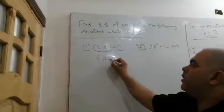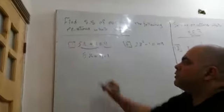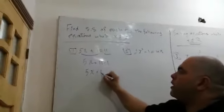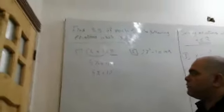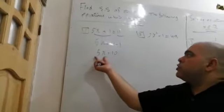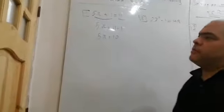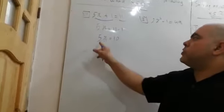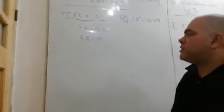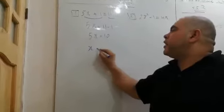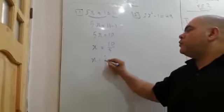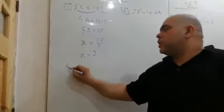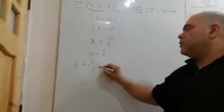5x equals 11 minus 1, so 5x equals 10. Left-hand side consists of a term 5x. This term consists of 5 and the variable x, so x equals 10 over 5. Then x equals 2. Solution set equals 2 because 2 belongs to real numbers.